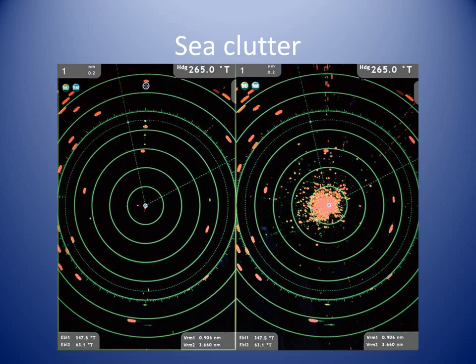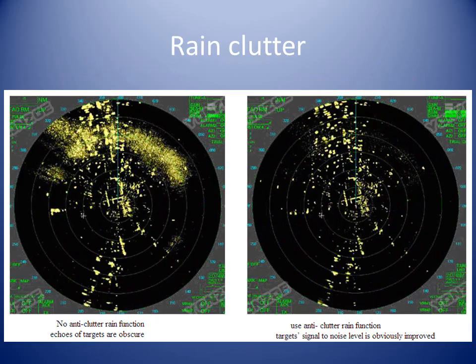1. Increase the gain to the maximum. 2. Reduce the sea controls to the minimum. 3. Reduce the gain to a level where most of the clutter is just removed and the targets can be distinguished. 4. If required, increase the sea control to reduce the sea clutter near to the center of the screen.